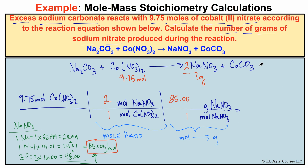To put this all in our calculator, we start with the starting quantity on the left and work right to left. We multiply by numbers in the numerator and divide by numbers in the denominator. Since we have no denominator values other than one, we just multiply: 9.75 × 2 × 85.00. Using the correct number of significant figures, we get 1.68 × 10³ grams of sodium nitrate.